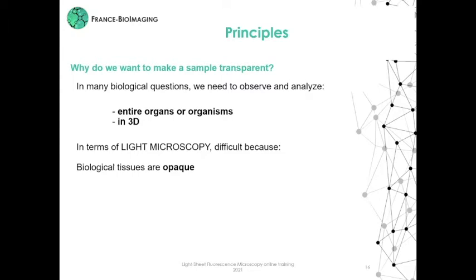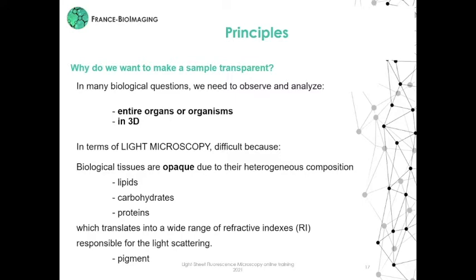Tissues are opaque due to their heterogeneous composition in lipids, carbohydrates, and proteins. This heterogeneous composition is translated into a wide range of refractive indexes responsible for light scattering, and tissue pigments also participate to light diffusion. As a result, tissues are opaque and microscopic techniques are limited in depth.